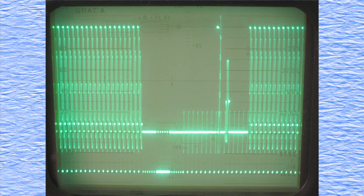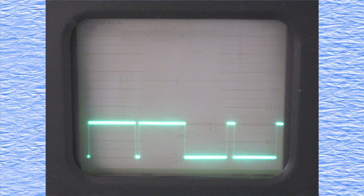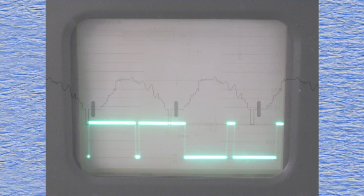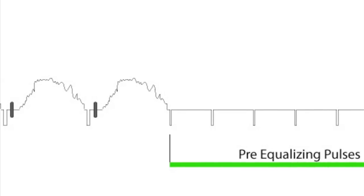Vertical sync is a much more complex signal than horizontal. Vertical sync is composed of two different types of pulses and the frequency of them is double that of horizontal sync.